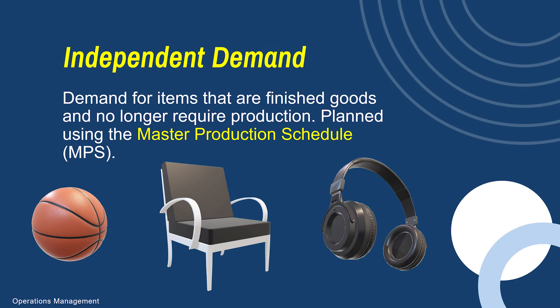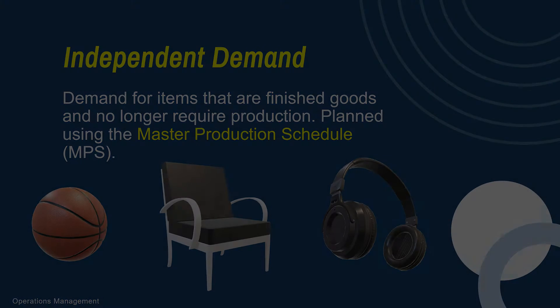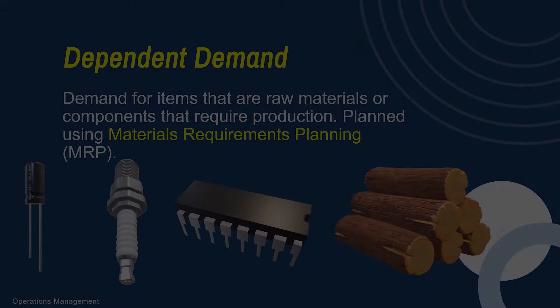First, I want to talk about independent demand. Remember, we talked about how it starts with consumer demand. We have independent demand — these are finished products, your final products. These are things that are on your master production schedule to produce. Your master production schedule brings these items that you're going to produce as finished goods.